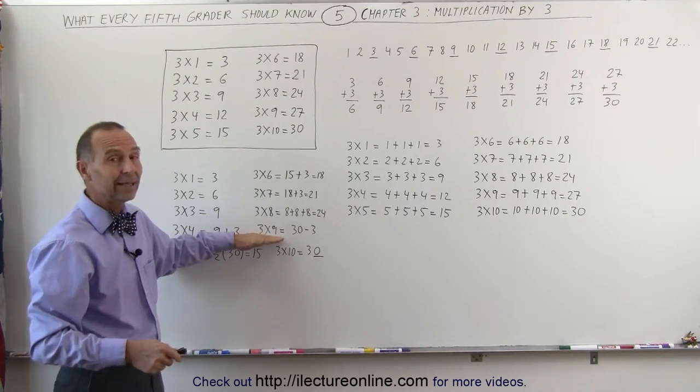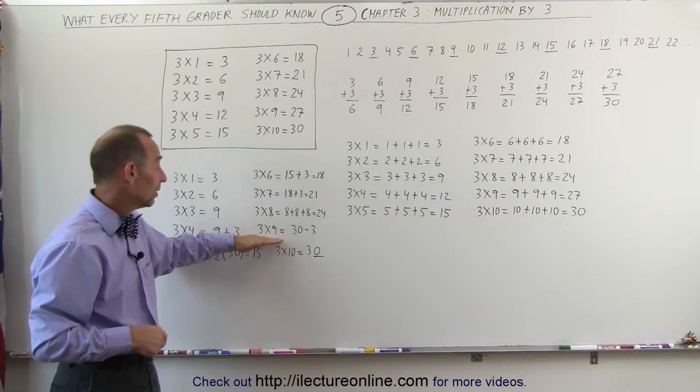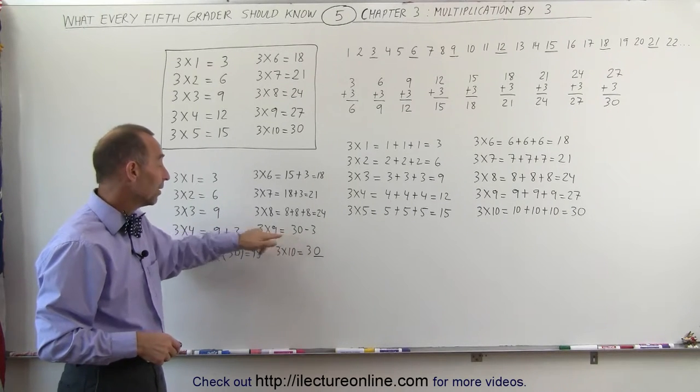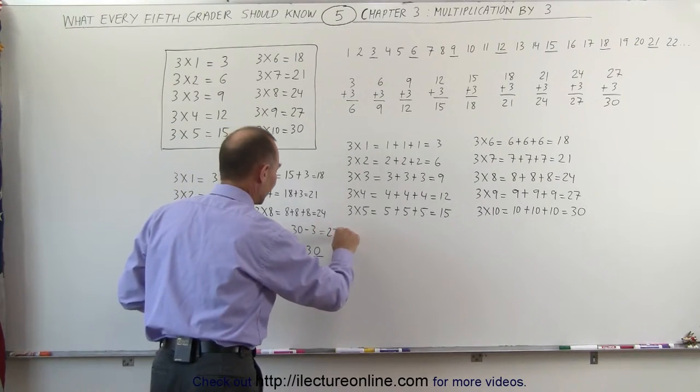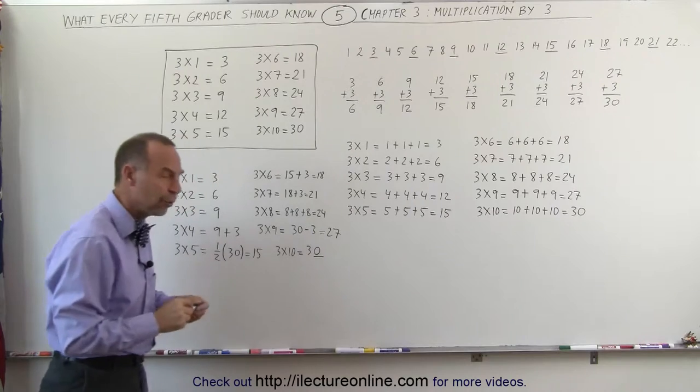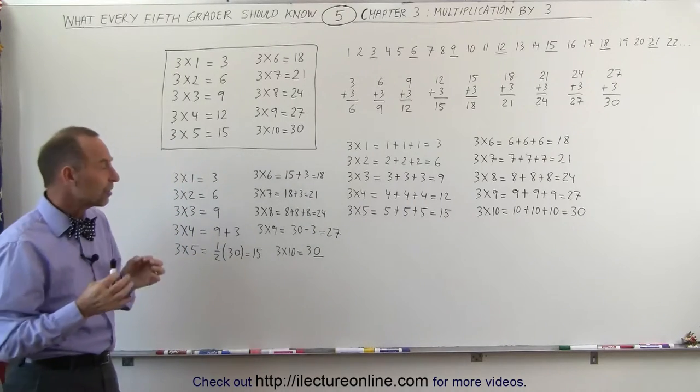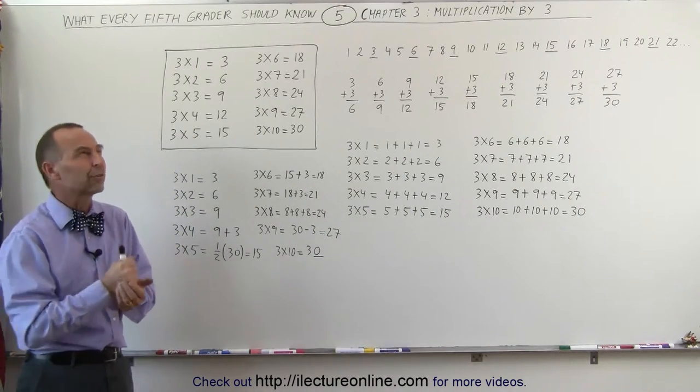And 3 times 9 is 3 times 10 minus 3. So 3 times 10 is 30, subtract 3 from it, you get 27. And finally, 3 times 10, of course, is 30. So coming up with these little tricks sometimes really helps if you just can't remember what it was.